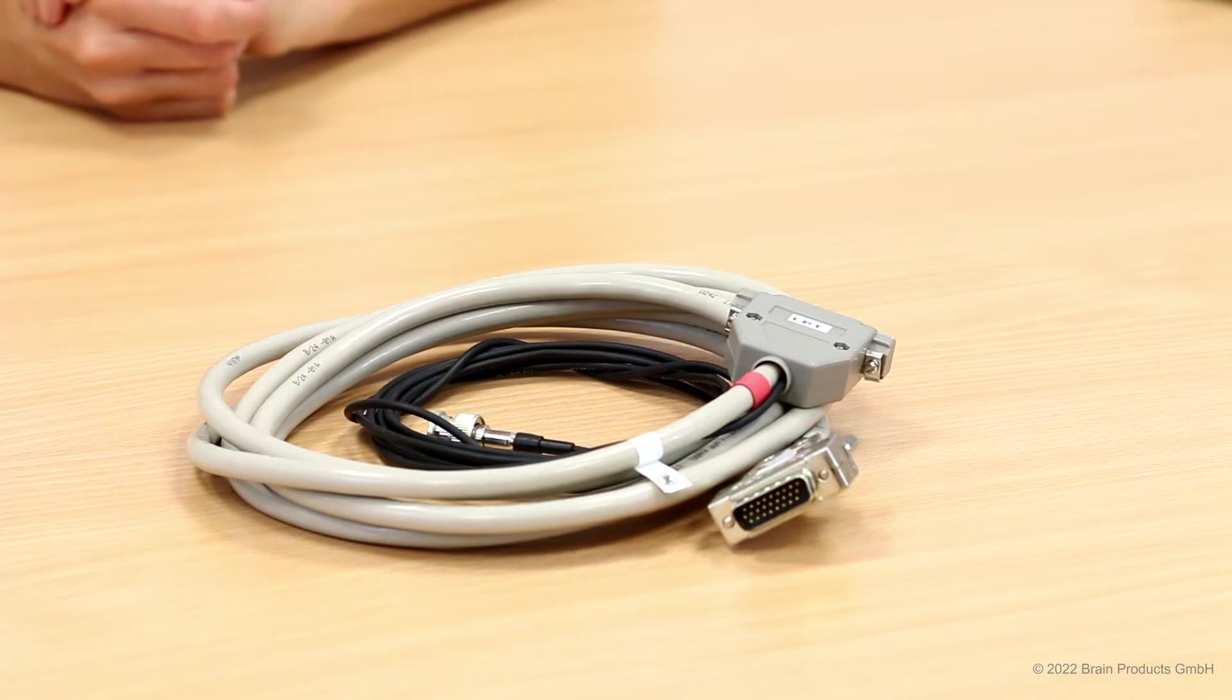Normally, this cable would connect to the BrainAmp directly to the trigger source via BNC or LPT ports and is mostly used in EEG fMRI setups. For our tutorial video though, we will show a different trigger solution.